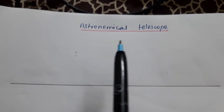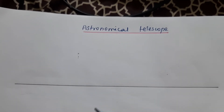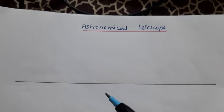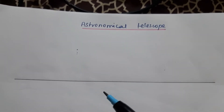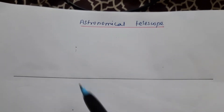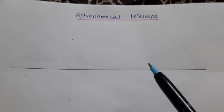Astronomical telescope. The astronomical telescope is used to magnify distant astronomical objects like stars, planets, moons, etc. In an astronomical telescope we take two lenses — one is an objective and another one is an eyepiece.